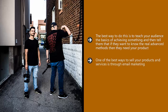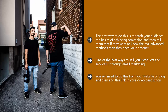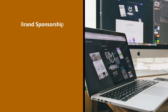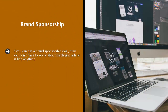One of the best ways to sell your products and services is through email marketing. You can use an email autoresponder service such as AWeber or GetResponse and provide something of value for free as an incentive to join your email list. You will need to do this from your website or blog and then add the link in your video description. Tell people in your videos the benefits of joining your email list and that you will provide more free tips and advice if they sign up.